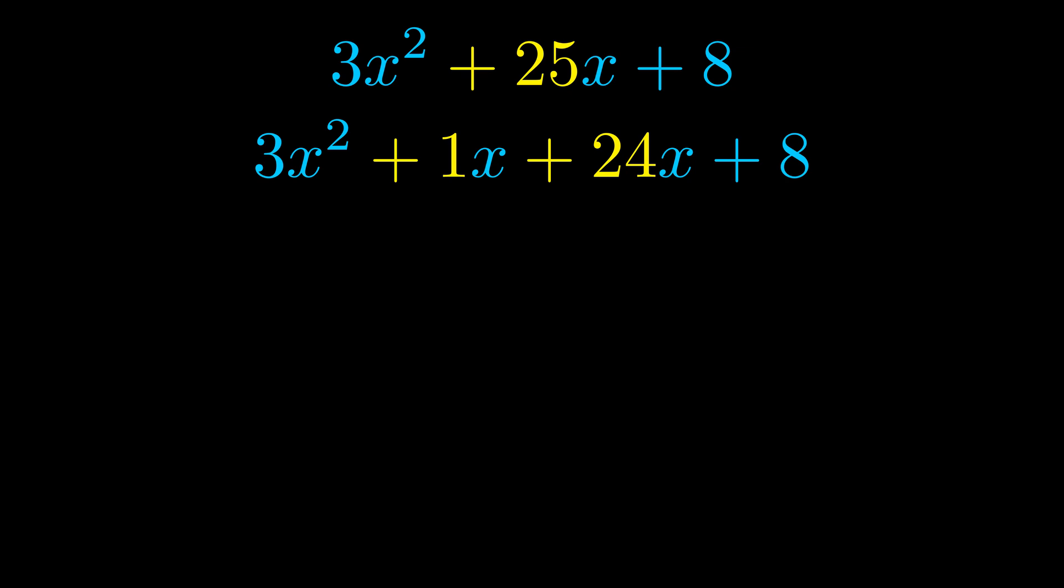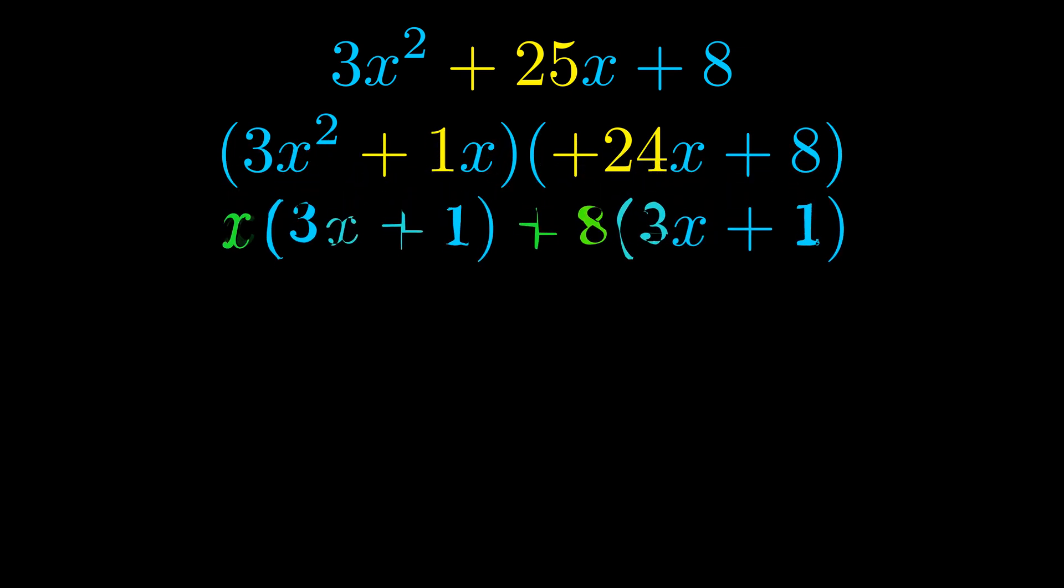Once we've done this, we go ahead and put parentheses around the first term and the last term. And we do that so that we can take the greatest common factor out of both terms. We can see the greatest common factor is now outside in green.